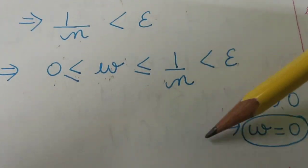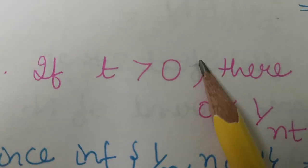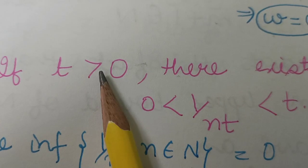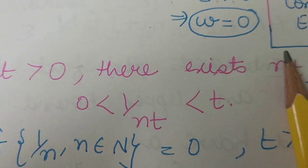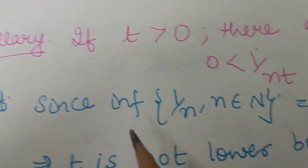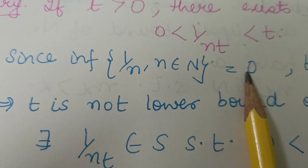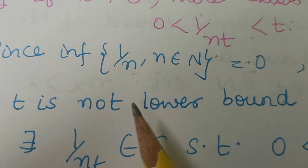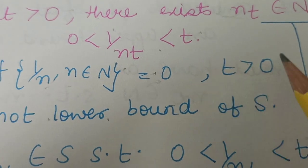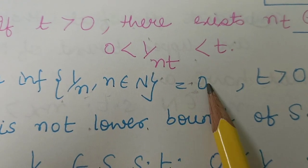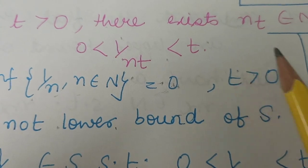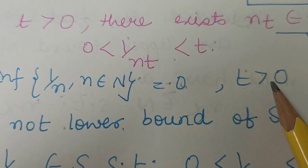This was basically a corollary proven step by step. The next corollary states: if t > 0, then there exists a natural number n such that 1/n < t, where 1/n is greater than 0.